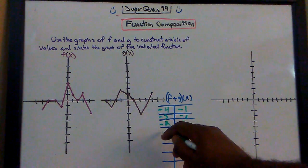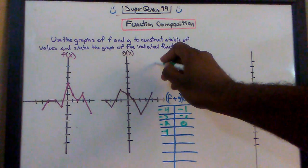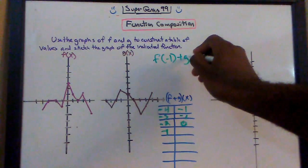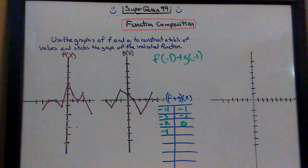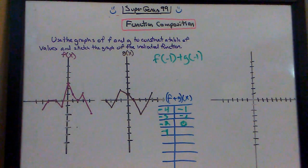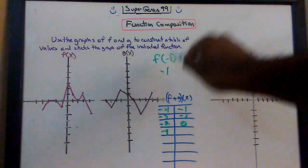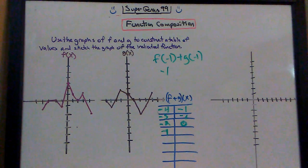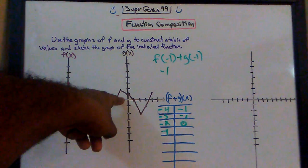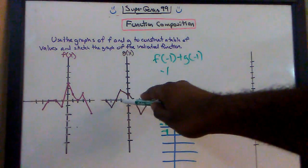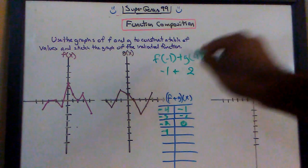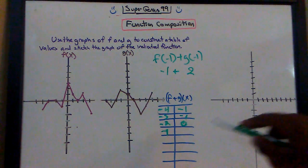Now let's compute f plus g at x equals negative 1. What is f of negative 1 plus g of negative 1? We go into the f graph and when x is negative 1, y is negative 1 on the f function. Then on the g function, when x is negative 1, y is 2. So what is negative 1 plus 2? That's 1, so we put a 1 here.